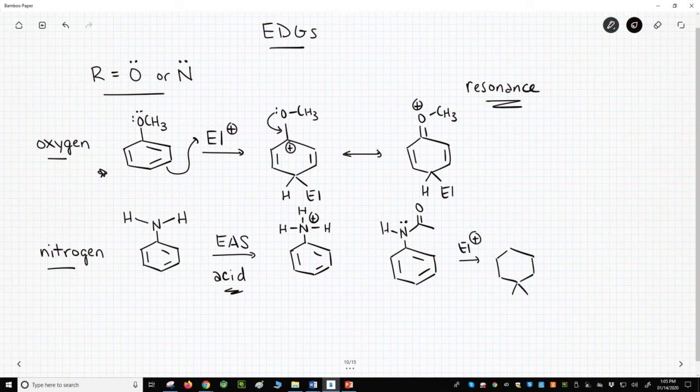Here is our electrophile. Here is our cationic intermediate. Our nitrogen with the lone pair can act as an electron-donating group and stabilize the charge.